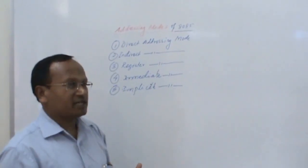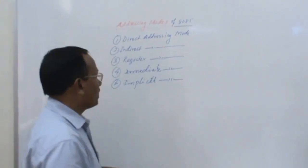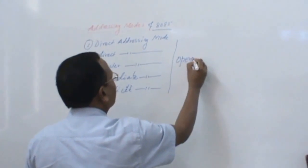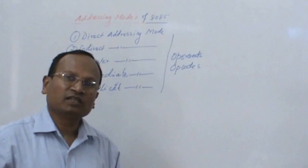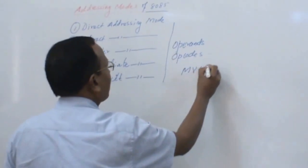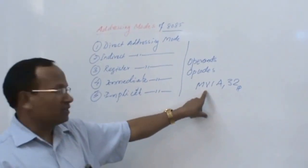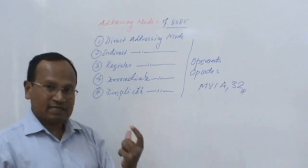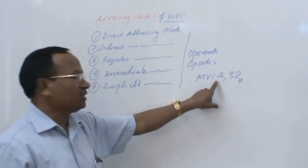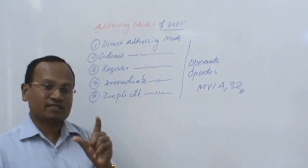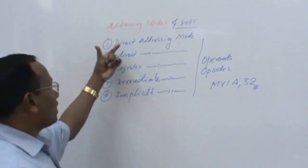Let us define addressing modes. Addressing modes are different ways in which operands are specified. As we understand, there are two important things in any microprocessor: operands and opcodes. Opcodes are hexadecimal codes. For example, if I write MVI A, 32H — MVI A is the mnemonic, A is the accumulator, and 32H is 8-bit data. So 8-bit or 16-bit data, which we call immediate data, and registers are called operands. There are different ways by which we specify the operands, and those different ways are called addressing modes.